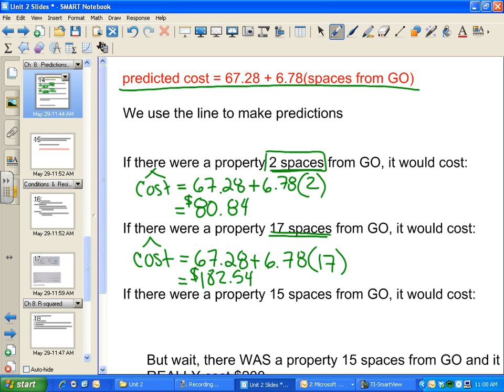Let's do one more. What about 15 spaces from GO? I can get a predicted cost by plugging 15 into my equation. I just type that into my calculator and got $168.98. You should definitely plug these in and make sure you get the same answer.